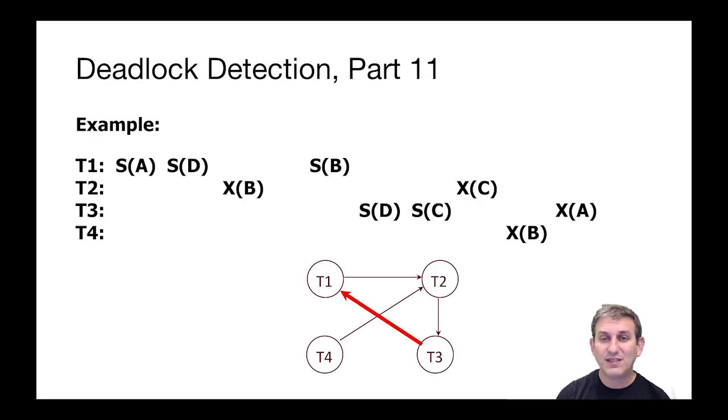Finally, T3, which can still make progress here, decides it wants an exclusive lock on A, which makes it wait on T1. I've colored that edge red because it's the edge that creates a cycle. T1 is waiting for T2, T2 is waiting for T3, and now T3 is waiting for T1, and we know we have a deadlock.